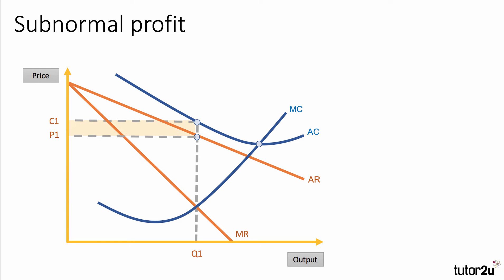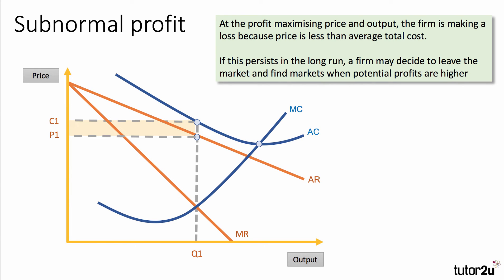Since C1 is greater than P1 — the reverse of the previous diagram — this firm is making a loss, shown by the shaded area. At the profit maximizing price and output, the firm is making a loss or subnormal profit because price is less than cost per unit. If this persists in the long run, the firm might decide to leave the market and find a sector where potential profits are higher.